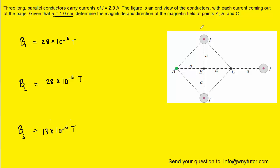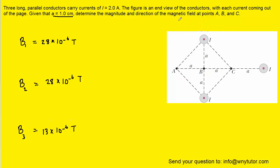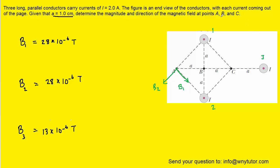Imagine wire 1 producing a magnetic field in a counterclockwise fashion at point A. As that circular arc reaches point A, it's going to be pointing exactly along a specific direction — that would be the direction of B1. Similarly, wire 2 produces a counterclockwise magnetic field, and when it reaches point A it points in its own direction — that is B2. Wire 3 also produces a counterclockwise circular magnetic field, and when it reaches point A it is pointing straight downward — that would be B3.